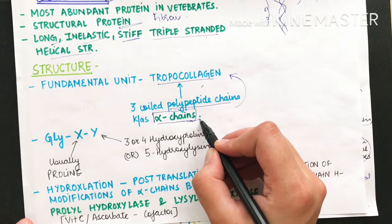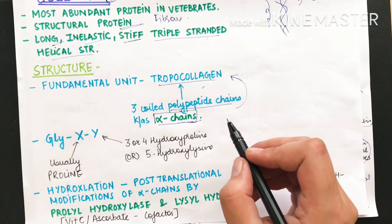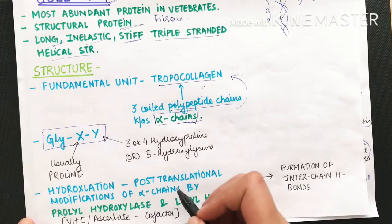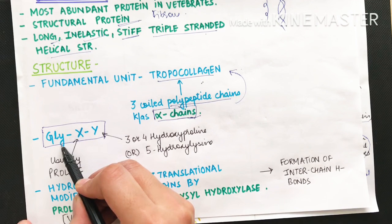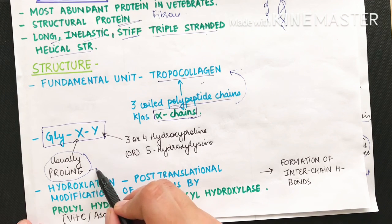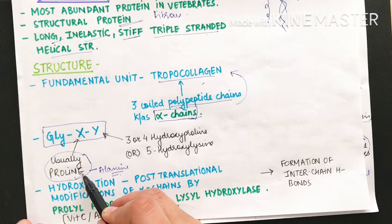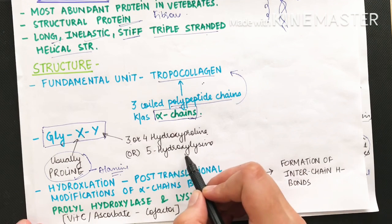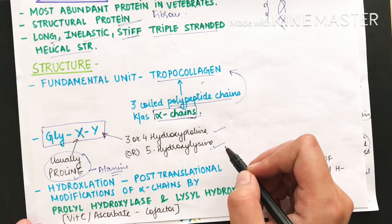The alpha chain has a repetitive amino acid sequence: glycine-X-Y, where this tripeptide sequence is repeated throughout. At position X we usually get proline, and at position Y we get either 3-hydroxyproline or 4-hydroxyproline, or 5-hydroxylysine.